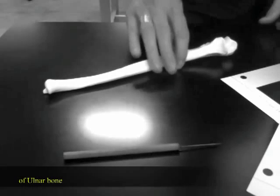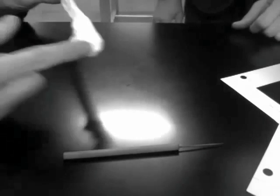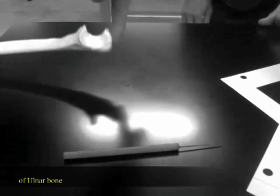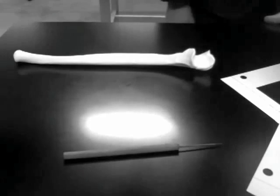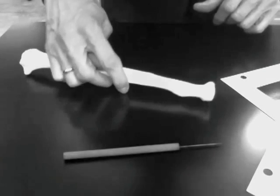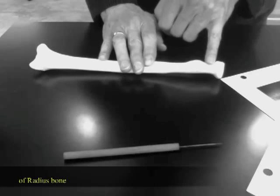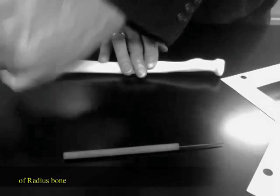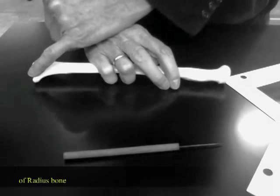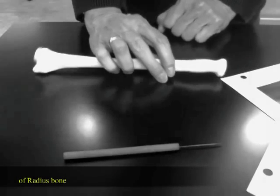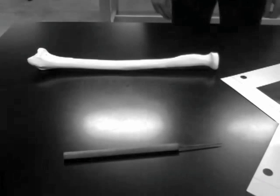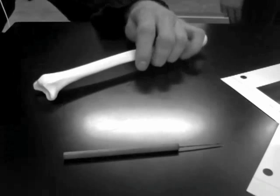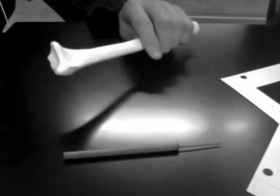This is the radius, styloid process. This is the radius. Sometimes they just call this the olecranon, but it is a process. Olecranon, coronoid, trochlear, radial, styloid. You have to know that's ulnar, is the head, the neck, the styloid process and the ulnar notch on the radius. The scaphoid facet, we're not going to do the facets on the radius.